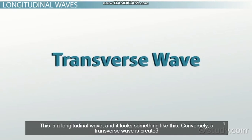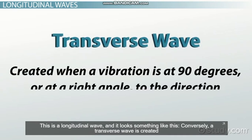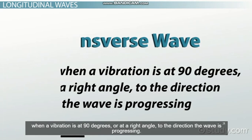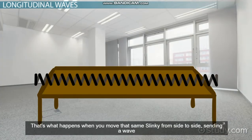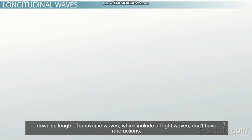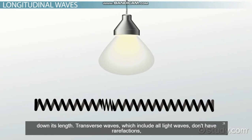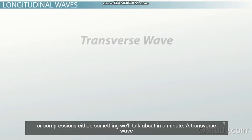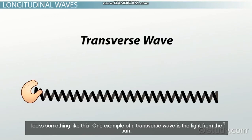Conversely, a transverse wave is created when the vibration is at 90 degrees, or at a right angle, to the direction the wave is progressing. That's what happens when you move that same slinky from side to side, sending a wave down its length. Transverse waves, which include all light waves, don't have rarefactions or compressions either, something we'll talk about in a minute. A transverse wave looks something like this.